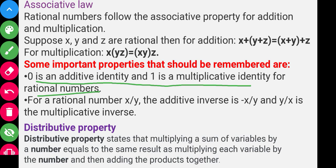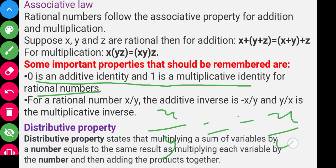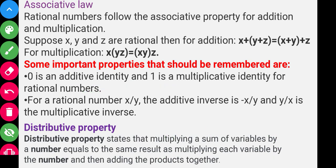For a rational number x/y, the additive inverse is -x/y. That means if a rational number is x/y, its additive inverse is -x/y. For example, the additive inverse of -1/2 is 1/2.